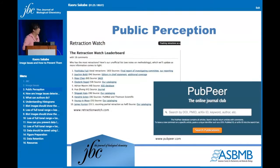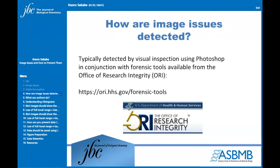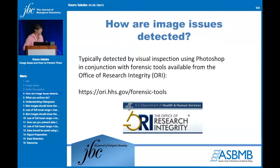A few of you are probably aware of these two websites: Retraction Watch and Pubpeer. Retraction Watch is a blog website where they highlight recent retractions happening in the scientific literature. Pubpeer originally started as an online discussion or journal club about published articles, but now it's turned into a repository where people comment where they think they found some inappropriate manipulation. Issues are detected by visual inspection using Photoshop, as well as tools from the Office of Research Integrity, or ORI.